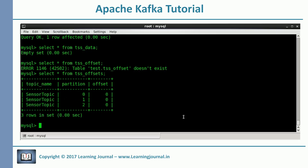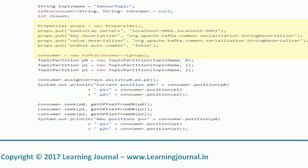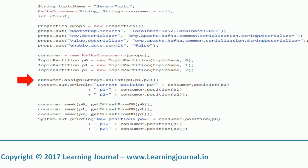Now it's time to look at the consumer code. As always, we set up properties and then instantiate a Kafka consumer object. Other than the mandatory properties, we have an additional property that will disable the auto-commit feature, so the consumer will not commit offsets automatically back to the Kafka broker. If we wanted automatic group management, we would subscribe to the topic and Kafka would automatically assign partitions. But in this example, we don't want Kafka to assign partitions to us, so we create three partition objects — one each for the three partitions we want to read — and then self-assign these three partitions.